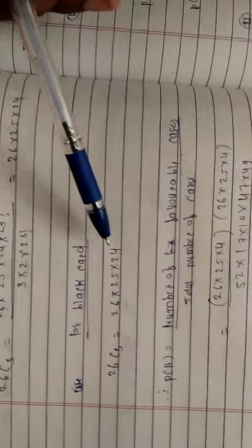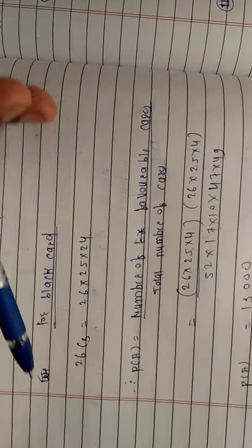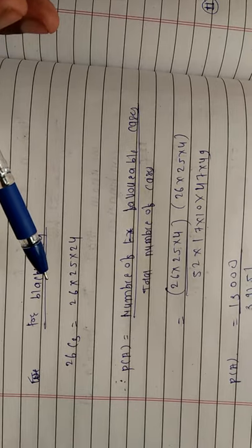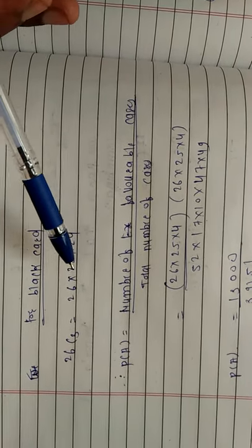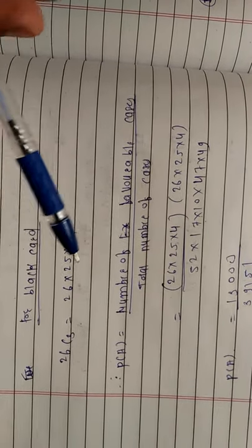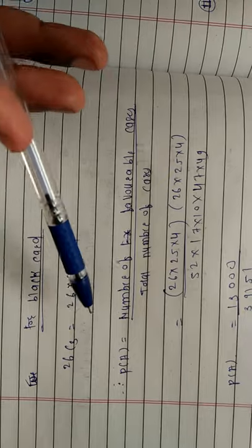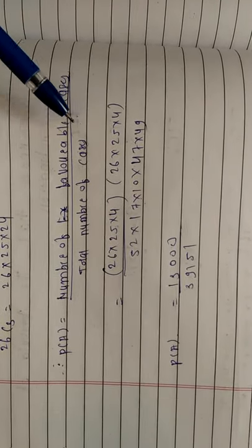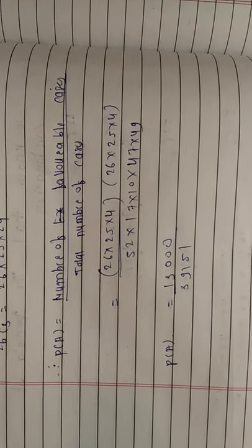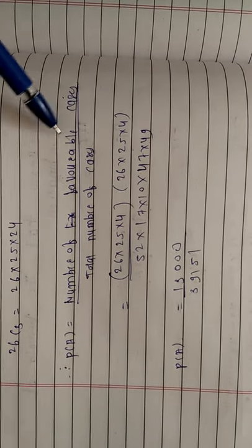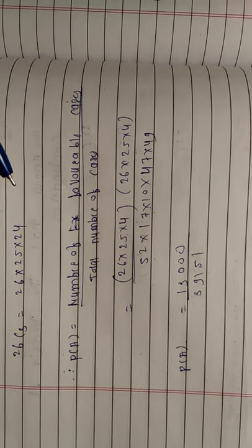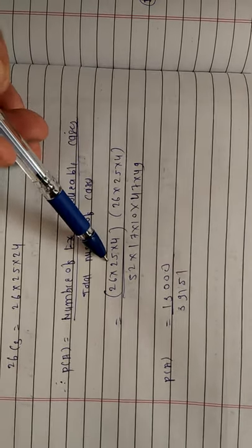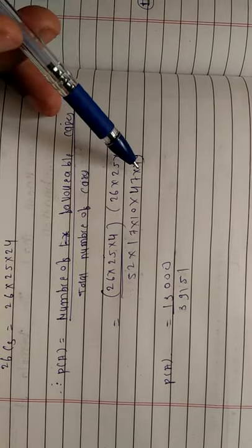Same way, there are 26 black cards. You can calculate this using 26C3, applying the formula n factorial divided by (n minus r) factorial into r factorial, giving 26C3. Our main formula is that the probability of an event equals the number of favorable cases divided by the total number of cases. The total number of cases is 52C6, and the number of favorable cases is: out of 26 red cards draw 3, and out of 26 black cards draw 3. So this is for red cards, this is for black cards, and this is the total number of cases.